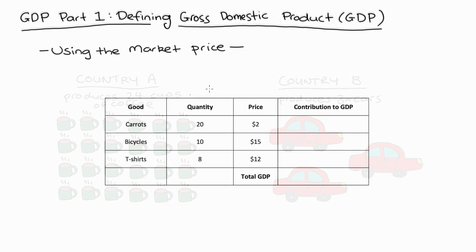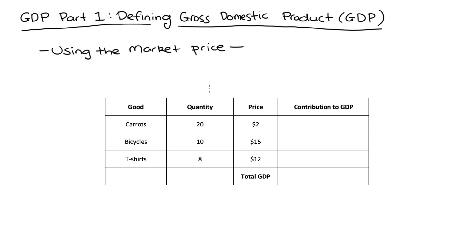If our country makes more than one good or service, we sum up the market value over each of the goods and services produced. For example, consider a table with three goods: carrots, bicycles, and t-shirts. We have the quantity produced and the market price per unit. We produce 20 carrots at $2 each — that's $40. We produce 10 bicycles at $15 each — that's $150. We produce 8 t-shirts at $12 each — that's $96. Summing up: 40 plus 150 plus 96 gives $286 total GDP for this country.